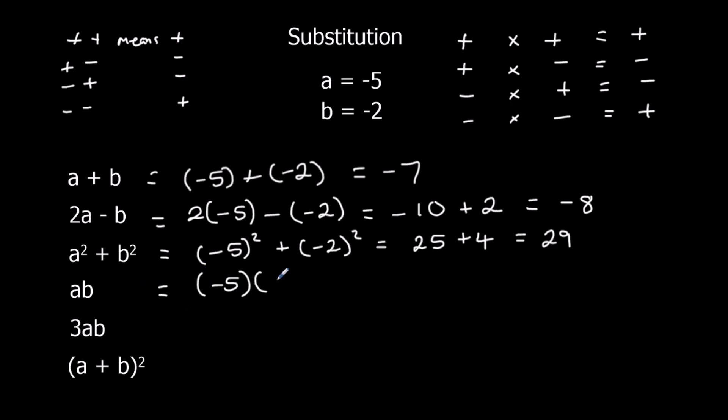AB, minus 5 multiplied by minus 2. A negative times a negative is a positive. 5 times 2 is 10. 3AB, well we know AB is 10, so 3AB is 3 times 10, which is 30. And A plus B squared, well A plus B is minus 7, so this is minus 7 squared. And negative times a negative is positive, 7 times 7 is 49.